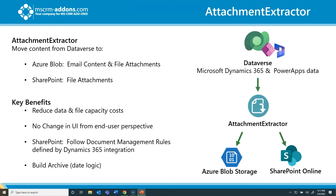From a high level, the way Attachment Extractor works is by moving attachments and email content from the Dataverse to an alternative storage location such as Azure Blob or SharePoint. Once that data is moved, Attachment Extractor saves a reference in the Dataverse, and the records and attachments are still going to be fully accessible via Dynamics or Power Apps. End users should see no change when accessing extracted content.